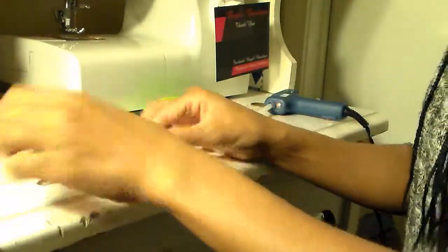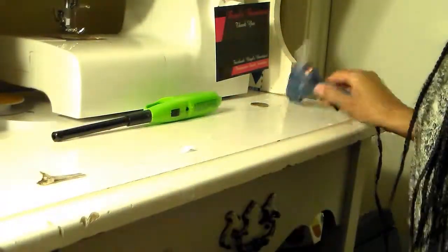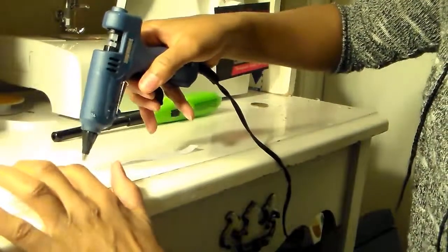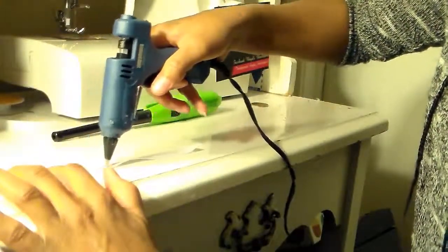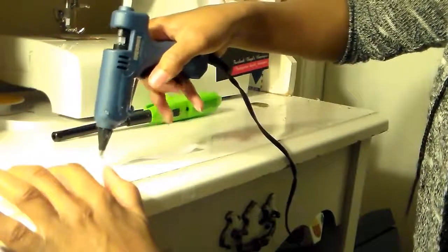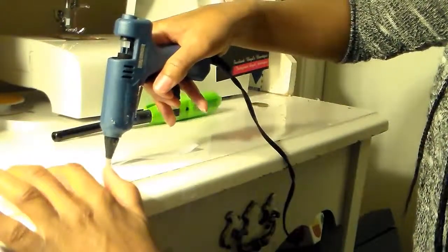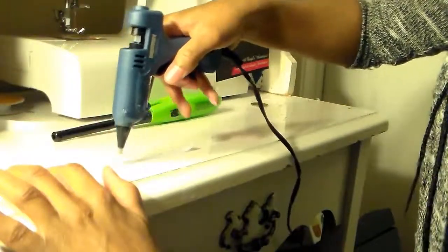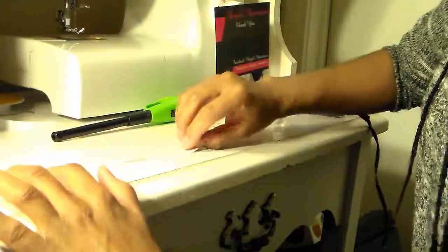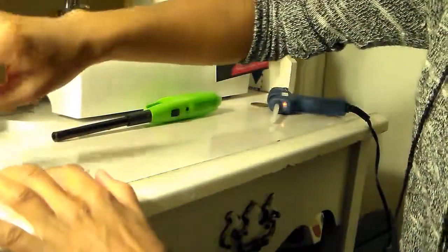Next you want to go ahead and set your clip down and put some glue about halfway up the ribbon. Fold your ribbon back over your clip.